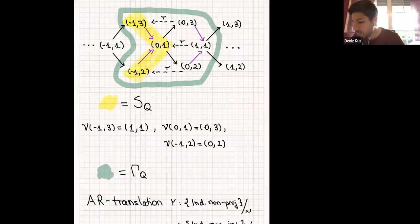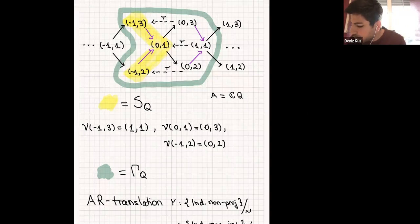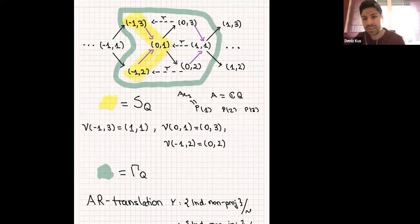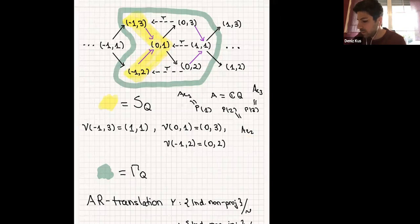To come back to your question: you can determine what the projective modules are. The projective modules come from the path algebra A of the quiver. The indecomposable projectives are P(1) = A·e1 (all paths ending at vertex 1), P(2) = A·e2, and P(3) = A·e3. To find P(1), you look at all paths ending at e1 starting at each vertex — only vertex 1 contributes, giving dimension vector α1.